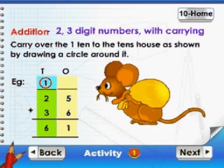Addition: two, three digit numbers with carrying. Carry over the one ten to the tens house as shown by drawing a circle around it.